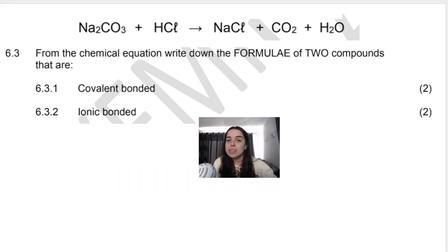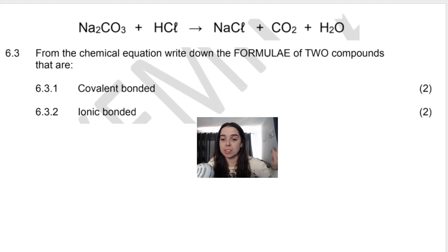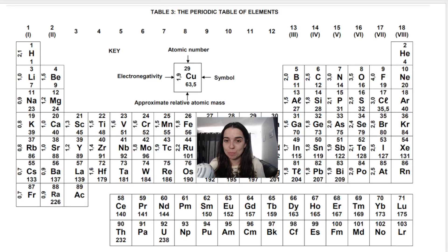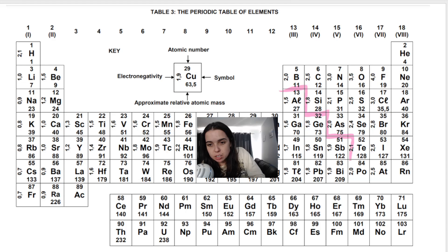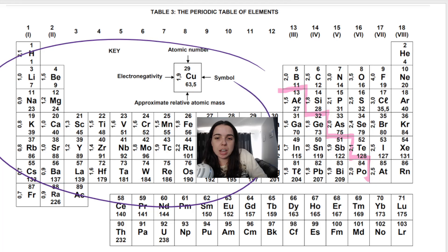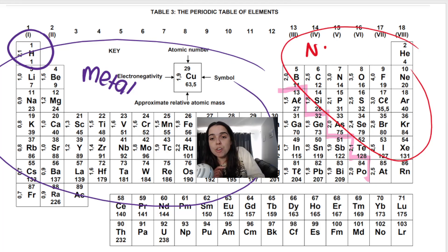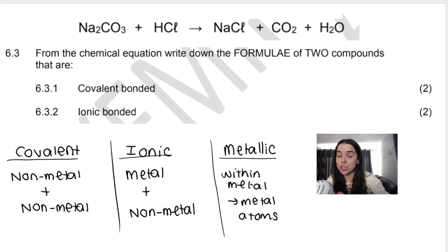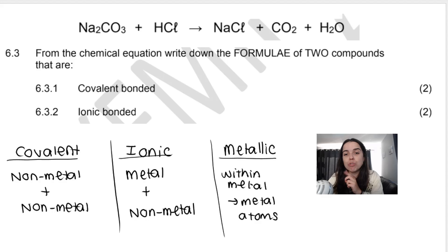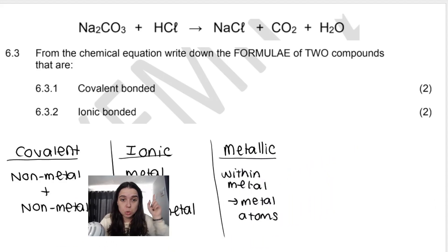As a recap: how to tell if something contains covalent or ionic bonds. In grade 10, we look at the periodic table. There's a step on the periodic table that separates metals from non-metals. Everything on one side of the step, except hydrogen — hydrogen is an exception — is a metal. Everything else on the other side of the step are non-metals. Covalent bonding occurs when a non-metal bonds with a non-metal. Ionic bonding occurs when a metal bonds with a non-metal. Metallic bonding is between metal atoms themselves.